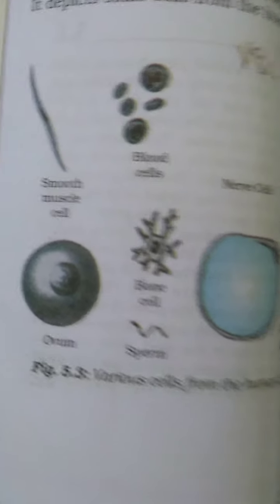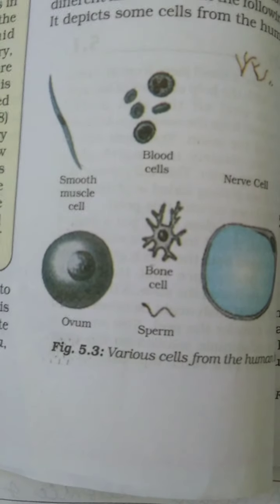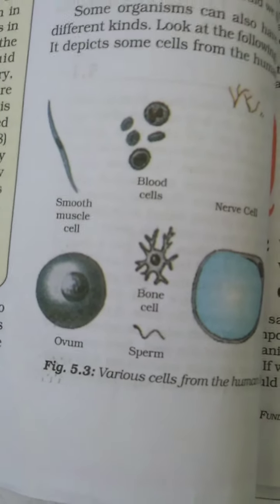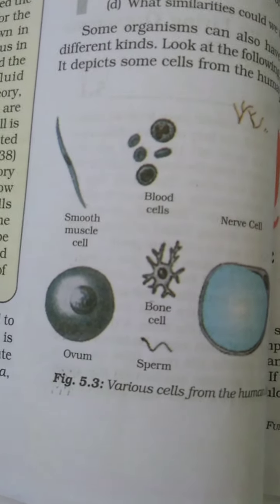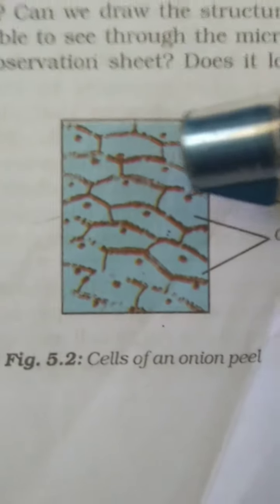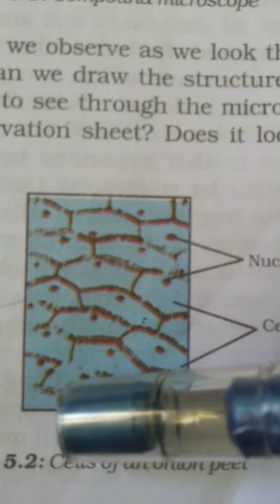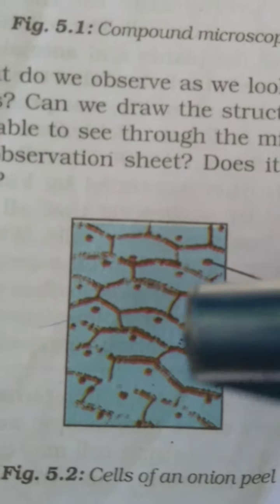Every cell has the capacity to perform basic functions, which are the characteristics of all living organisms. But how does a living cell perform basic functions? We have seen multicellular organisms — they have so many cells connected or divided. For example, these are the cells of the onion peel. It is a multicellular organism, meaning it has a lot of cells and they are divided.